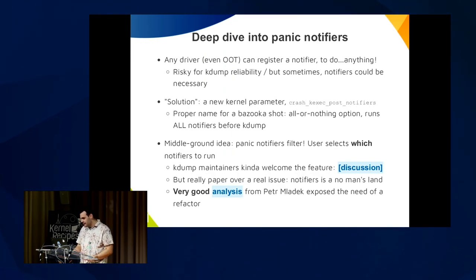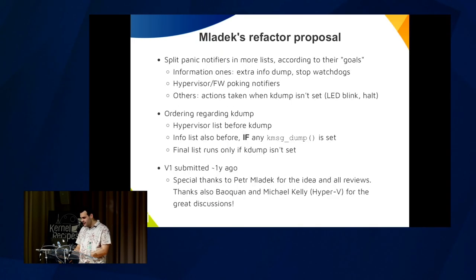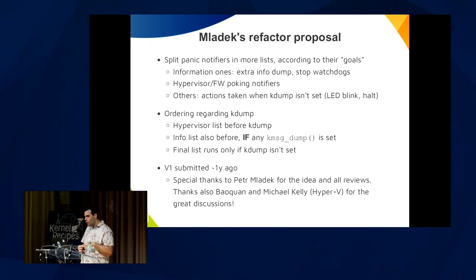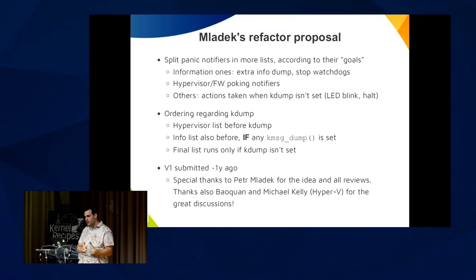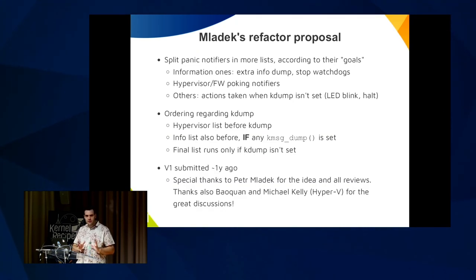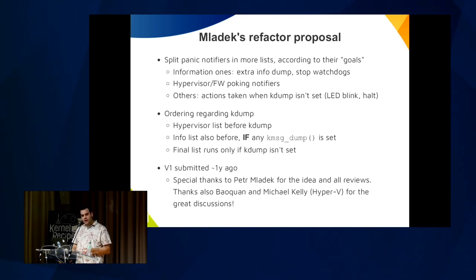There was a very good analysis from Peter Mládek, the printk maintainer, that exposed the need for a refactor. This is a sketch of the refactor proposal. While Peter was looking at it, he noticed we can split the notifiers into smaller lists — not just one — because there are some patterns: some notifiers were printing stuff or stopping watchdogs, others were poking the hypervisor or firmware, and others are miscellaneous — blinking LEDs and so on. We also need to order them regarding kdump: some hypervisor poking might be necessary before kdump, others after.